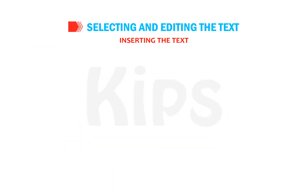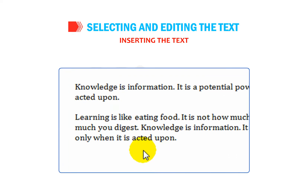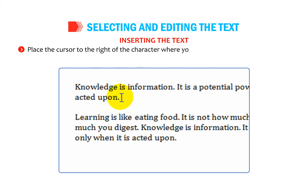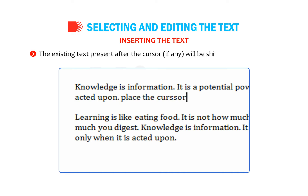Let us talk about inserting text. Microsoft Word allows users to add new text to an already existing document. Place the cursor to the right of the character where you want to insert the text and then start typing. The existing text present after the cursor, if any, will start shifting to the right side.